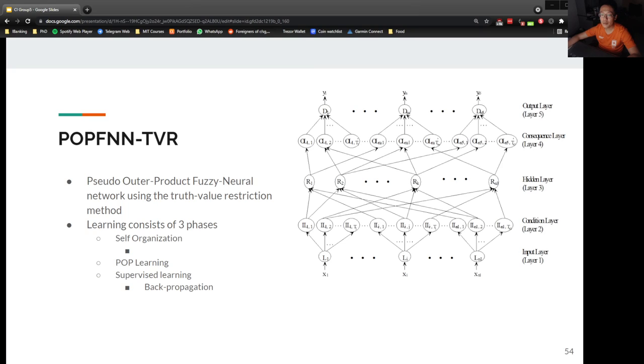The learning process of POPFNN consists of three phases: self-organization, POP learning, and supervised learning. A self-organizing algorithm is first employed to initialize the membership functions of both input and output variables. Lazy POP learning algorithm is then used to identify fuzzy rules supported by the training data. Lastly, the derived structure and parameters are fine-tuned using the backpropagation learning algorithm.